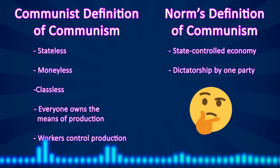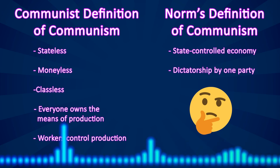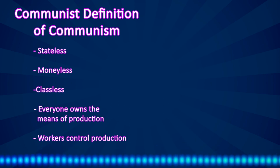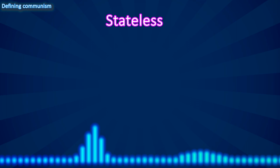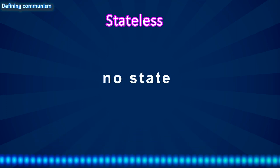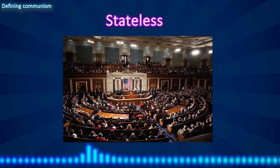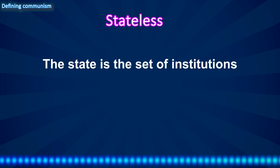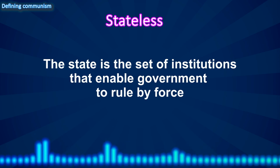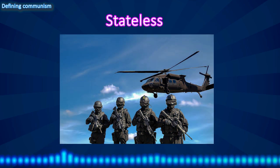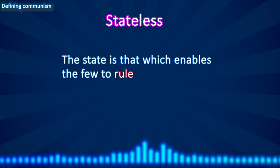How can it be that the way communists define communism is so very different from how most people define it? I'll explain why soon, but first let's explain the meaning of each aspect of the communist definition of communism, starting with the term stateless. Stateless means there is no state. The state is the set of institutions that enables government to rule by force. It enables a small fraction of the population to rule over society, with the power of armies, police, and prisons to force the population into submission. In other words, the state is that which enables the few to rule over the many.